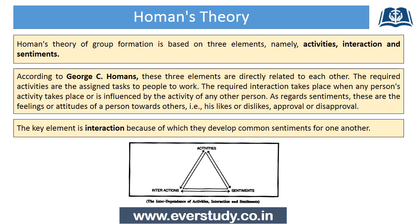Activities include the tasks that people are assigned. Interaction is when one person's activity is influenced by another person. Sentiments are our feelings or attitudes toward other people, such as likes, dislikes, approval, or disapproval. In this theory, interaction is a key element through which we develop common sentiments for each other, and this is the basic idea behind group formation.